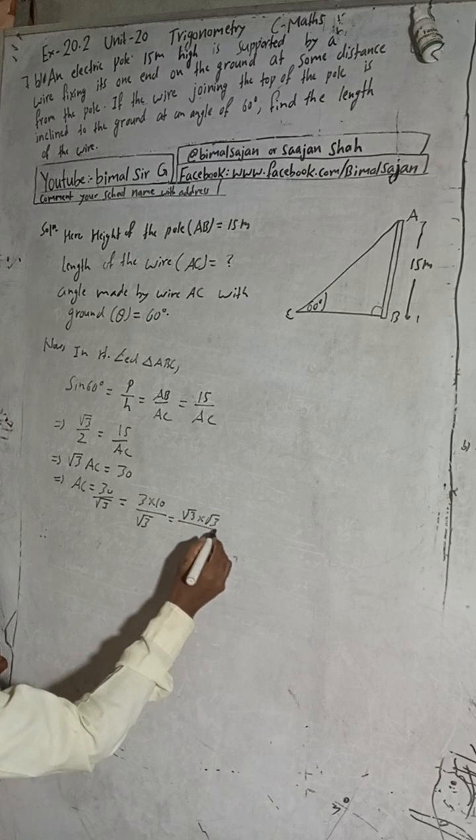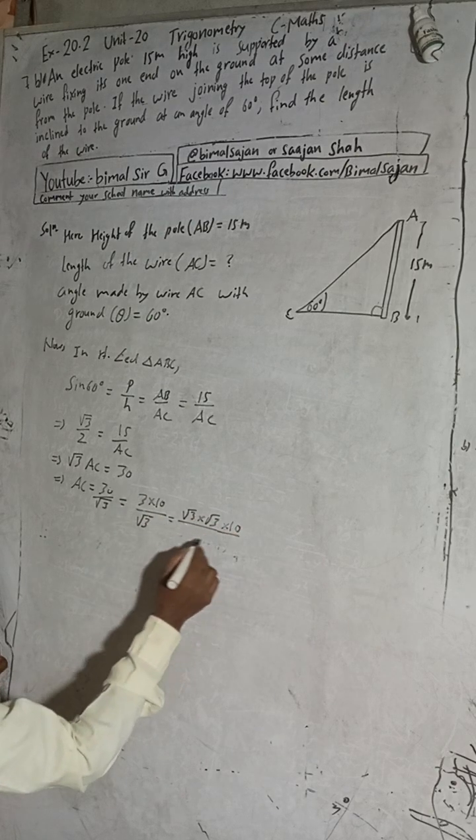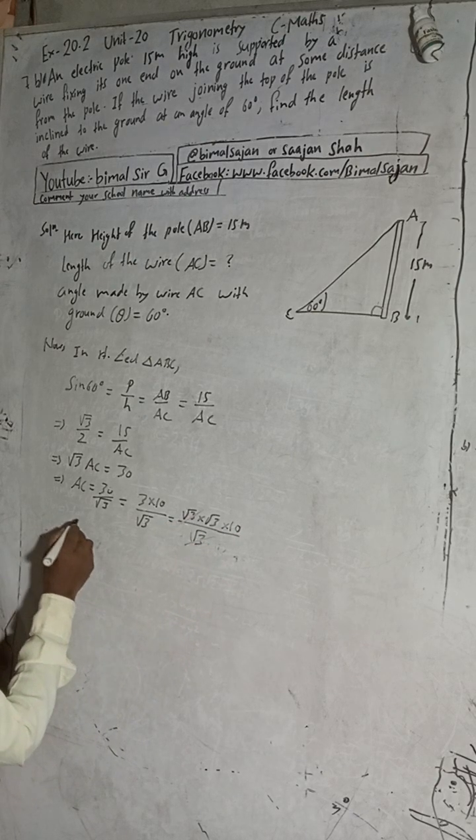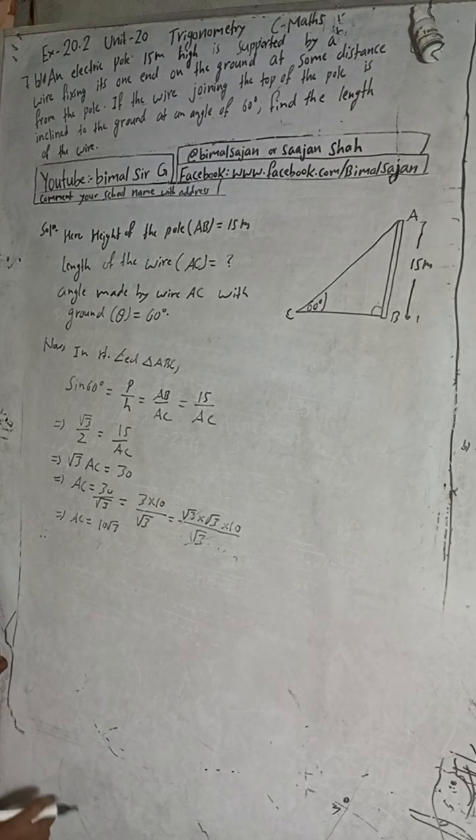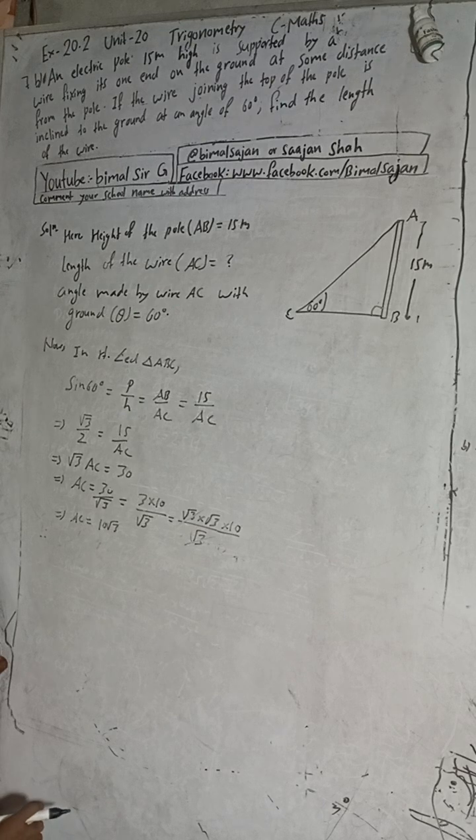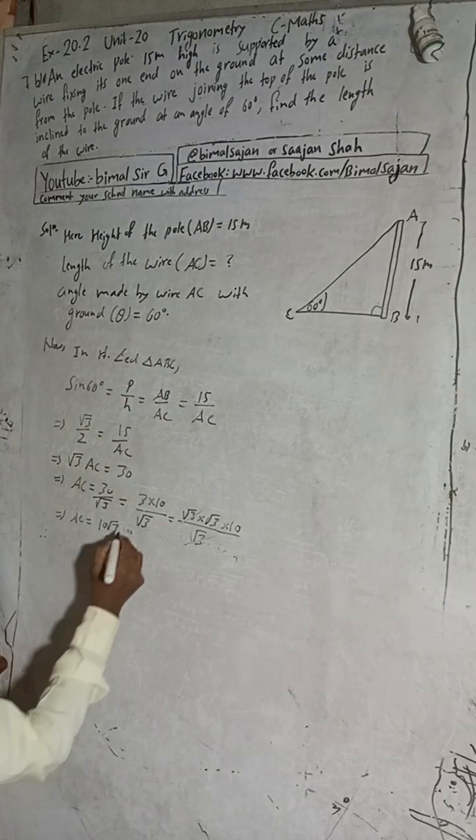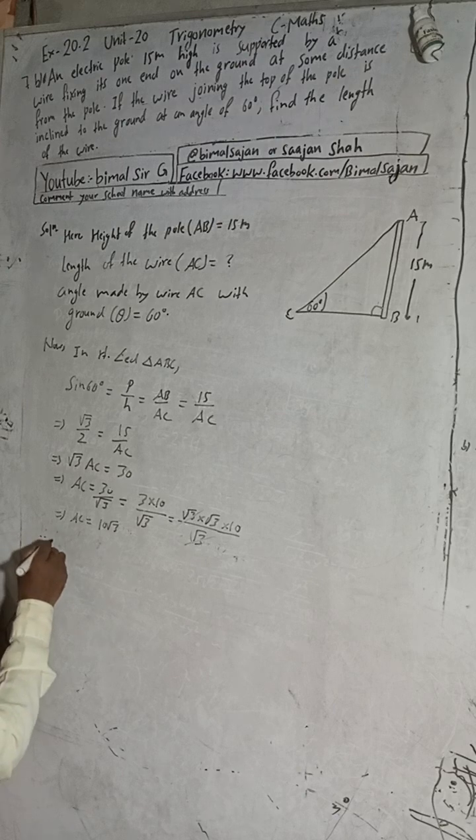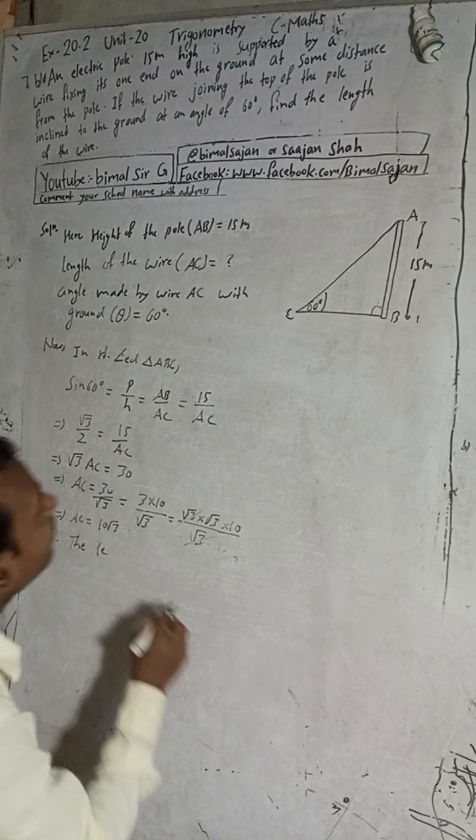So that's √3 times √3 times 10 and √3. √3 and √3 cancel, we get AC equals 10√3. So the answer in the book is 10√3 meters. Why meters? Because the height is given in meters, so this will be meters.